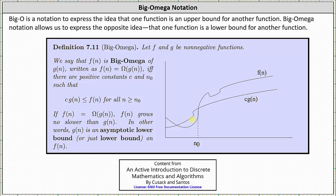Before we look at the formal definition, let's take a look at the graph. Let's say we are given this upper function f of n, and c times g of n is some function that's always less than or equal to f of n when n is greater than or equal to n sub zero. We can say f of n is bounded below by c times g of n, or c times g of n is a lower bound of f of n.